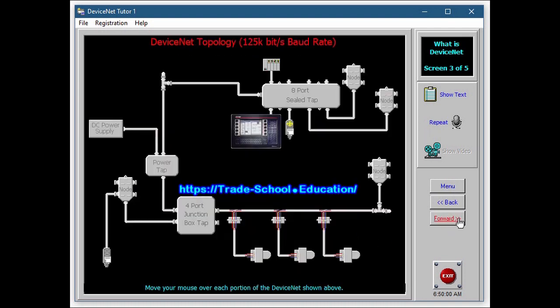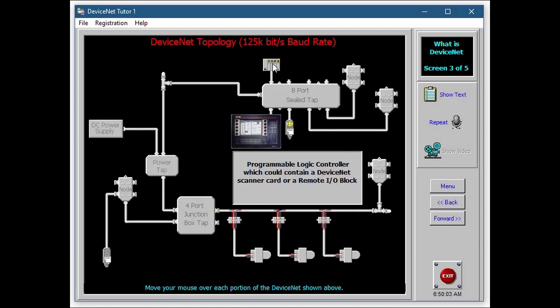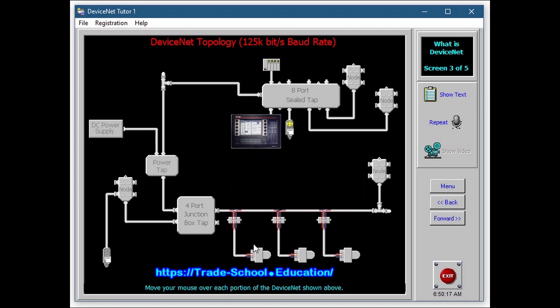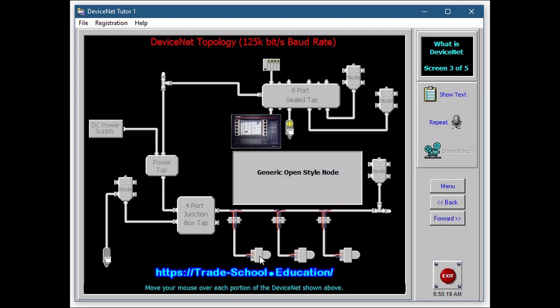One of the benefits of DeviceNet is that it provides an open communication network with the capability to link intelligent devices over a byte level network. DeviceNet can also reduce the amount of time required to install and wire discrete I.O. and has software that was written for an open standard protocol so that you the end user can reap the benefits.